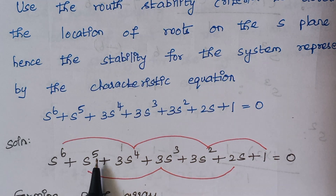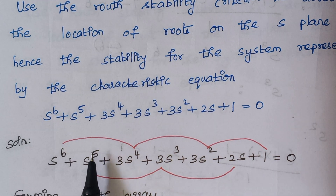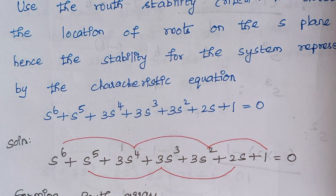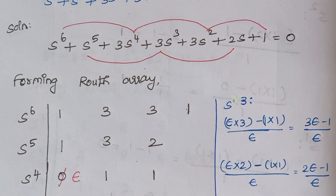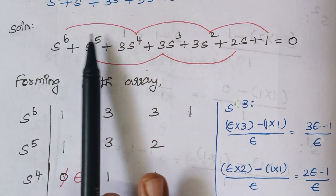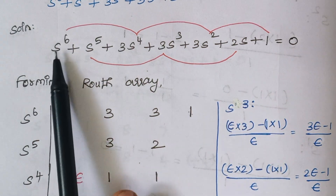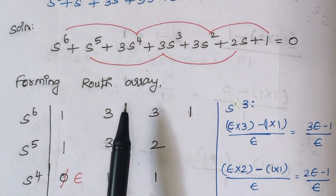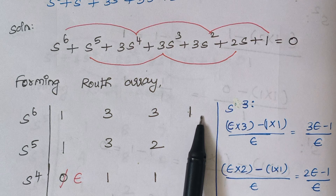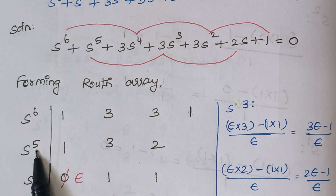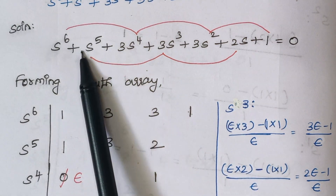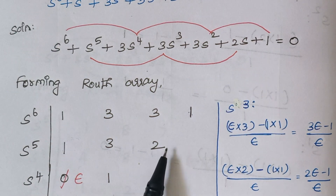The next term is s^5, which is an odd number, so we connect all the odd power terms: s^5, 3s^3, and 2s. The next step is to form the Routh array. The maximum power is s^6, so we write the coefficients of all even terms: coefficient of s^6 is 1, s^4 is 3, s^2 is 3, and s^0 is 1. For the s^5 row, we write all the coefficients of odd terms: s^5 is 1, s^3 is 3, and s^1 is 2.